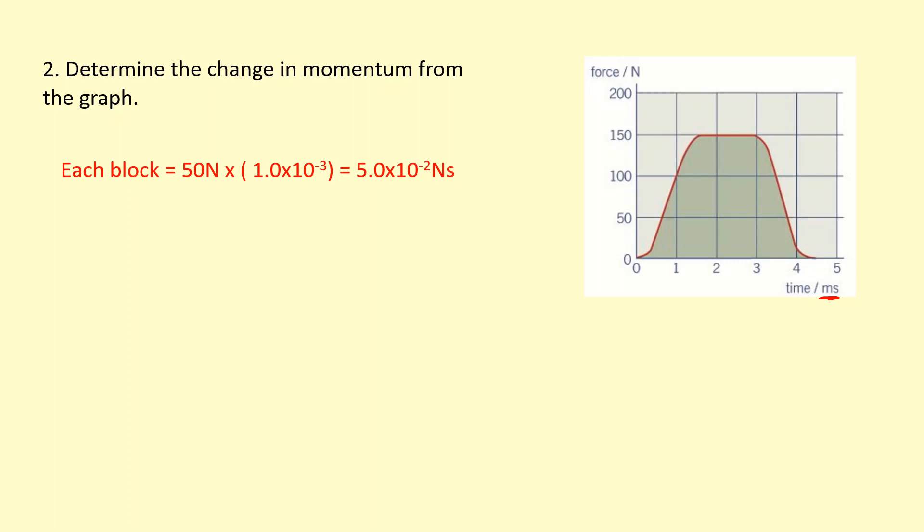Now I'm going to count the number of squares: 1, 2, 3, 4, 5 whole squares. And then I'm going to add up the others to see what I can get. So if I maybe add, this could be 6 here, if I join these two with this tiny piece here. And then we're going to have this as 7. These two joints together can be 7. And then maybe these two joints here could add up to 8. And then roughly half here, so around 8.5. So 8.5 blocks. And each one is 5 times 10^-2 newton seconds. So the total change in momentum, if you multiply it together, you get 0.425 newton seconds.